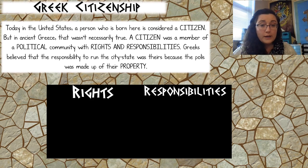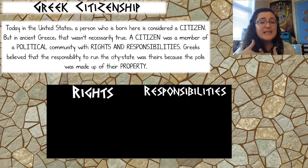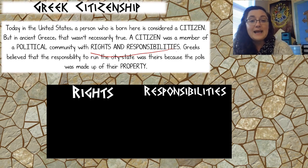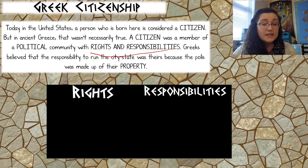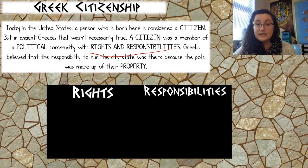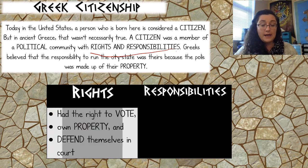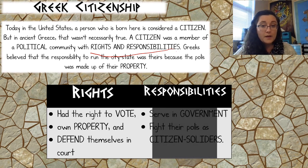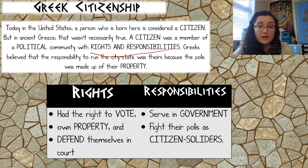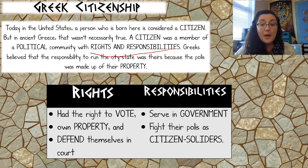When we look at people who live in a polis and are born into a certain community, we call that person a citizen. But in Ancient Greece, being a citizen was more complicated. A citizen was a member of a political community with both rights and responsibilities. Not everybody in Ancient Greece was considered a citizen of their polis. The rights of a Greek citizen included the right to vote, own property, and defend yourself in court. The responsibilities included serving in the government and fighting for your polis as a citizen soldier.